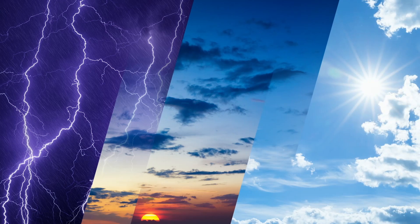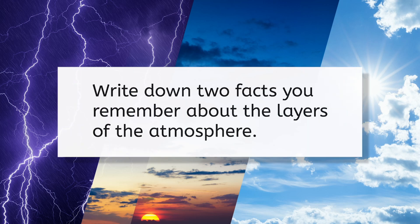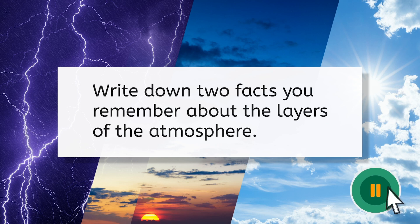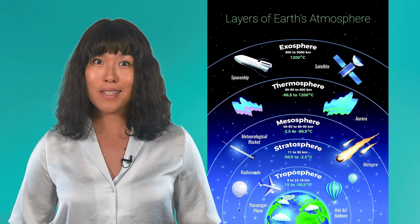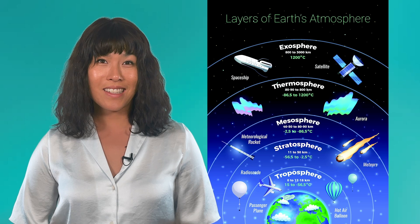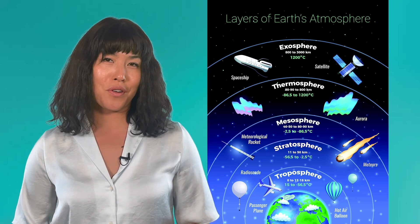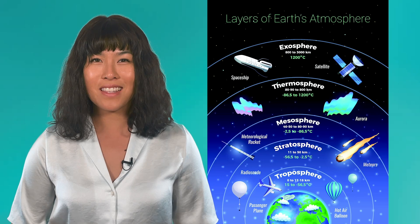Let's start with what we already know. Pause the video for a moment and record two facts that you remember about the layers that make up our atmosphere. Maybe you can remember how many layers there are, or maybe you remember some facts about the layers? Do your best. If you said that there are five different layers, or that each layer has its own unique properties, you're on the right track. Going back through our trip journal, we can see our notes on each of these layers.